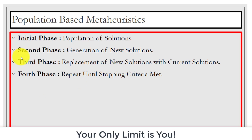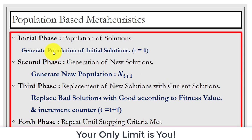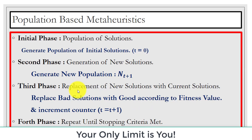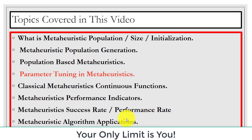We repeat this process until we meet the stopping criteria. For example, first we generate the initial population with the iteration counter at 0. Then we generate a new solution for the next generation. We use a fitness function to identify good and bad solutions. Based on fitness values, we perform replacement — replacing bad solutions with the good ones — then increment the counter, and repeat until the stopping criteria is met, after which we print the optimal point.